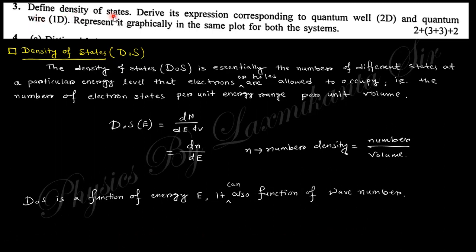Question number 3 says: define density of states. Density of states is nothing but the number of different states at a particular energy with a unit energy separation per unit volume, which is defined as dN/dE, where N is the number density, that is the number per volume.